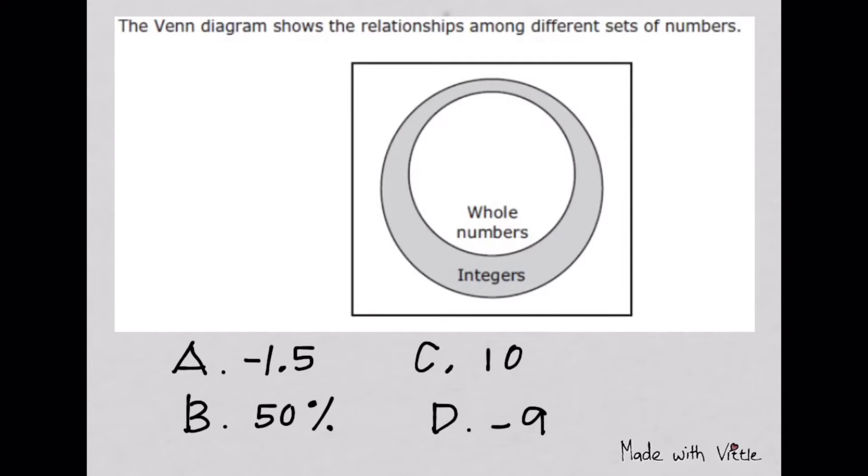Which number would be located in the shaded part of the diagram? Everybody already knows what rational numbers are and the different names we can call them - counting numbers, whole numbers, integers, or rational numbers like fractions, decimals, and percents. Which among the choices will be placed in the shaded part of the diagram?